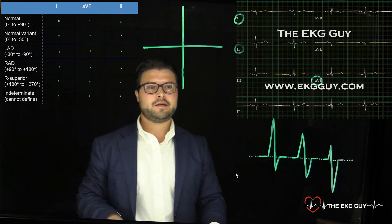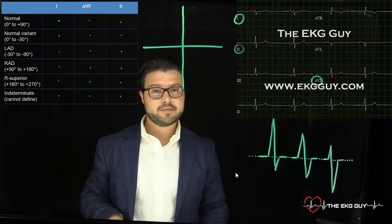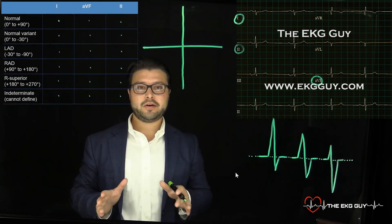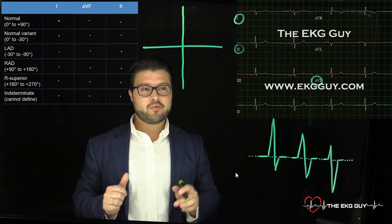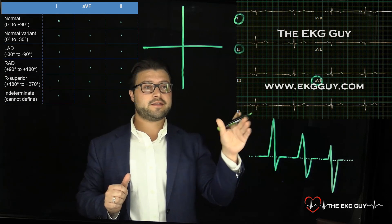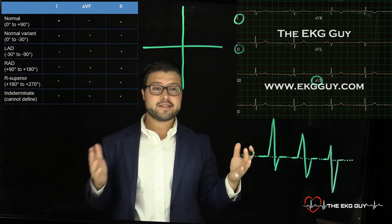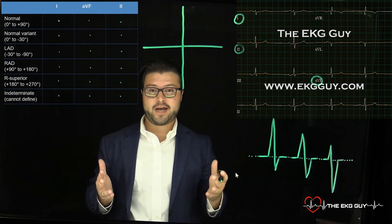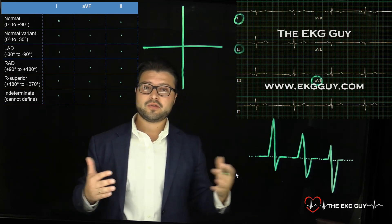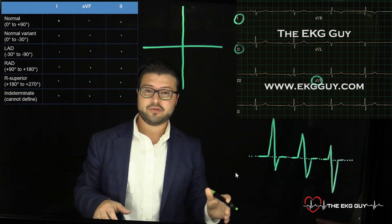Welcome to the EKG Guy. Many of you have asked about electrical axis because this tends to be a common area of trouble when first learning. We're going to use the example posted over the last week as our illustration. Here's the EKG we posted — we were asking you to find the ventricular axis, the QRS axis. This is really helpful as we look at the differential diagnosis and pointing to different causes of underlying structural heart disease.